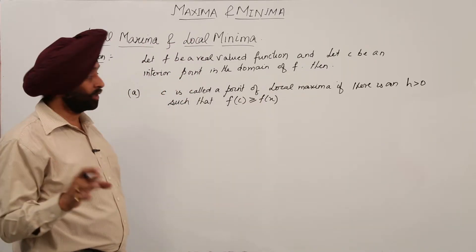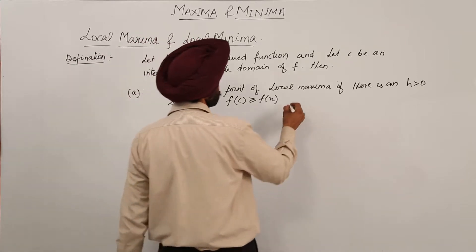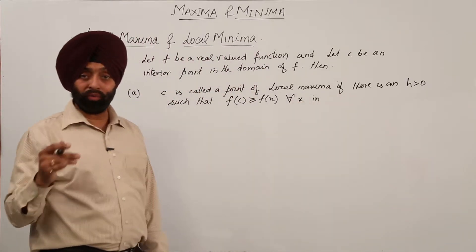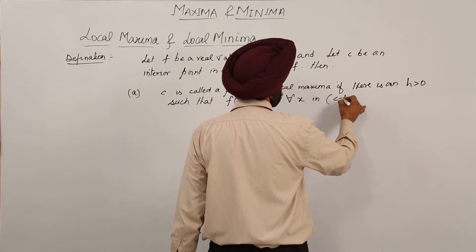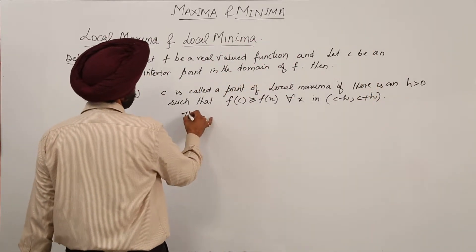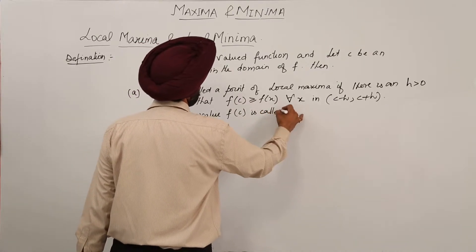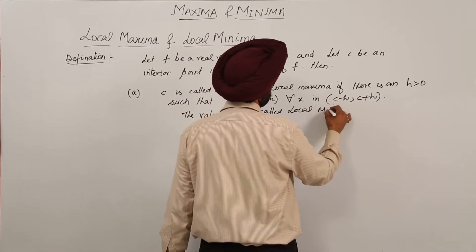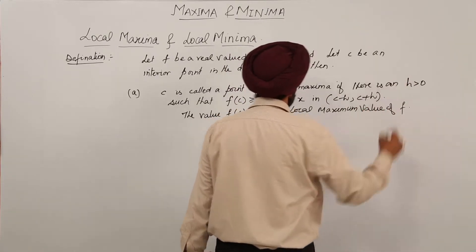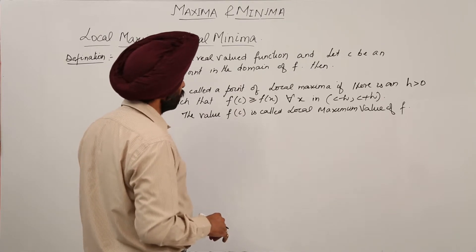This is a little different from maximum and minimum values — there it was for all values of x in the real numbers, but here it is for all values of x in the open interval (c minus h, c plus h). The value f(c) is called the local maximum value of f, also termed as local maxima.